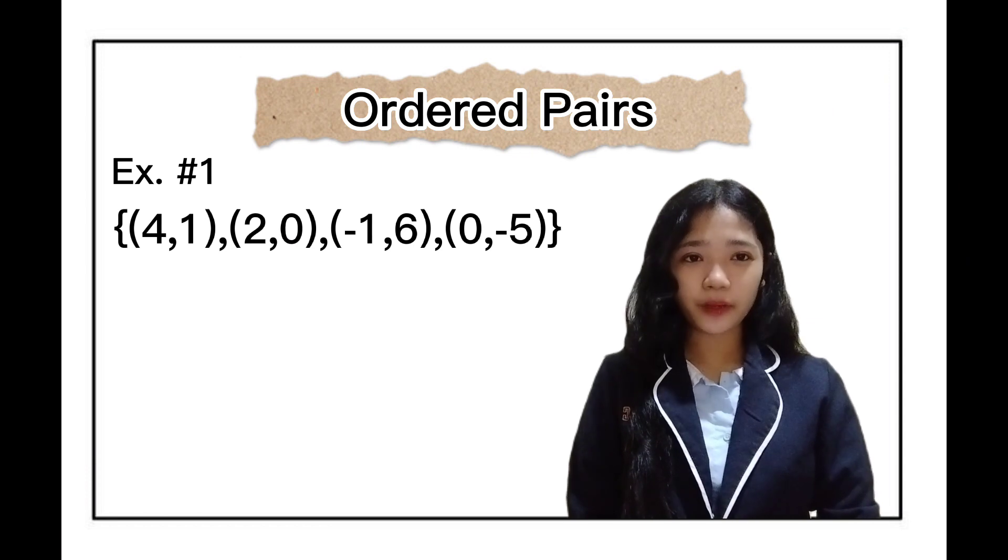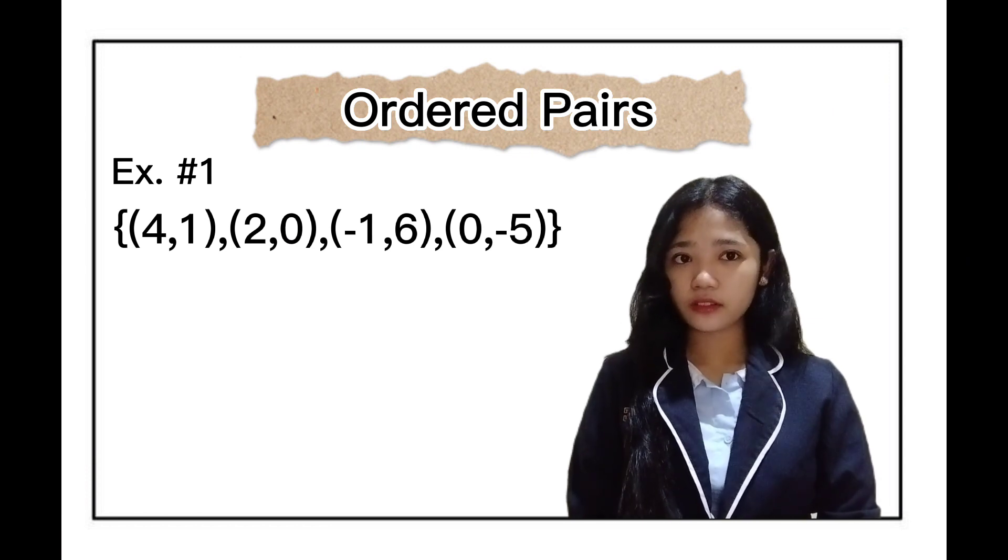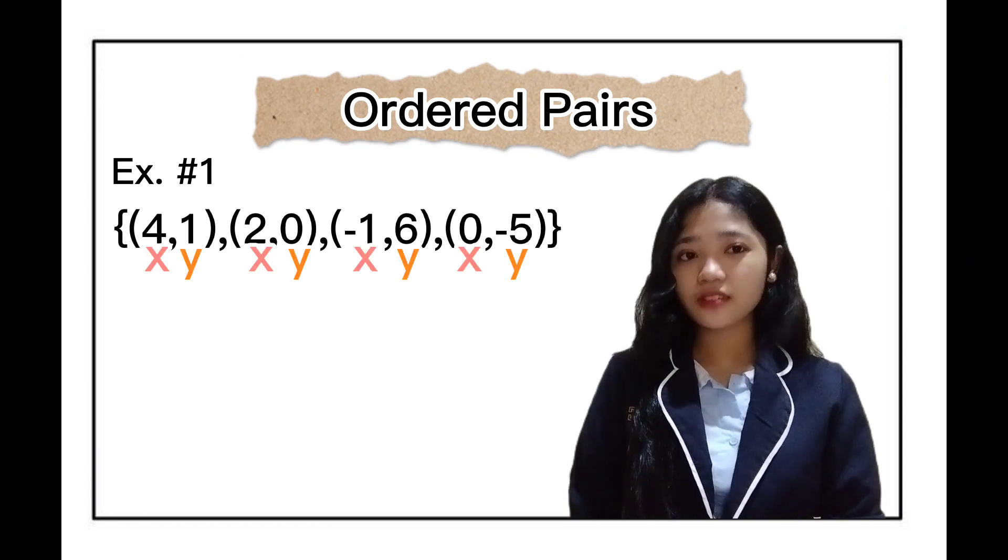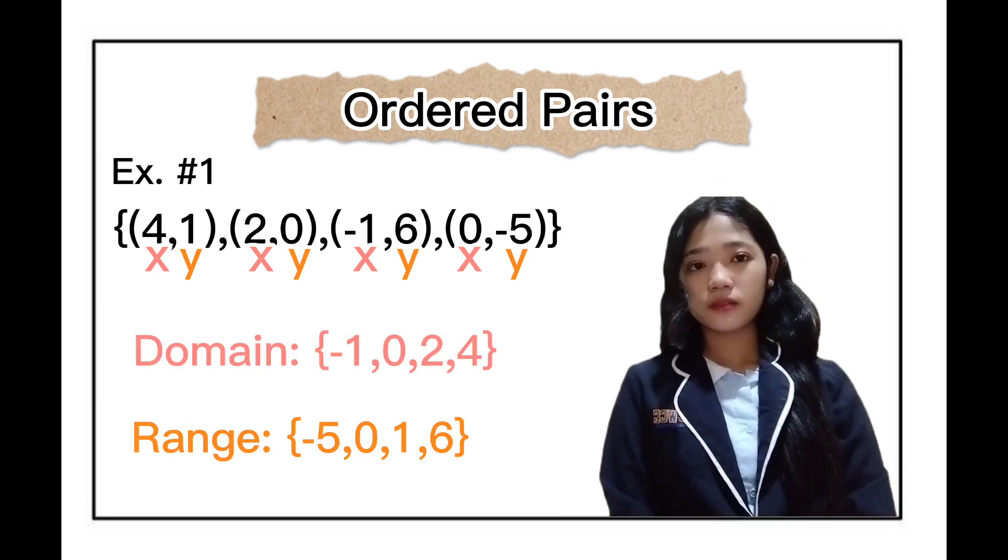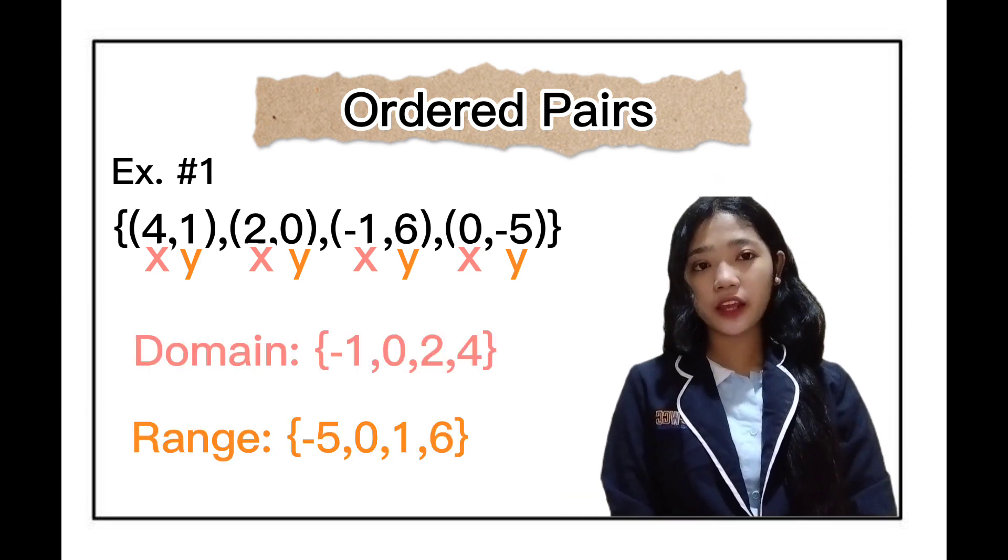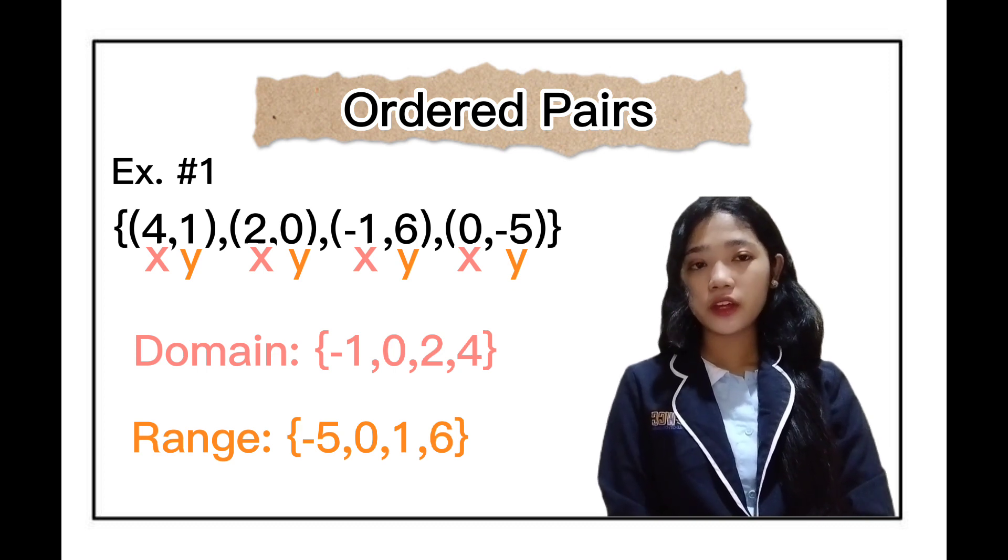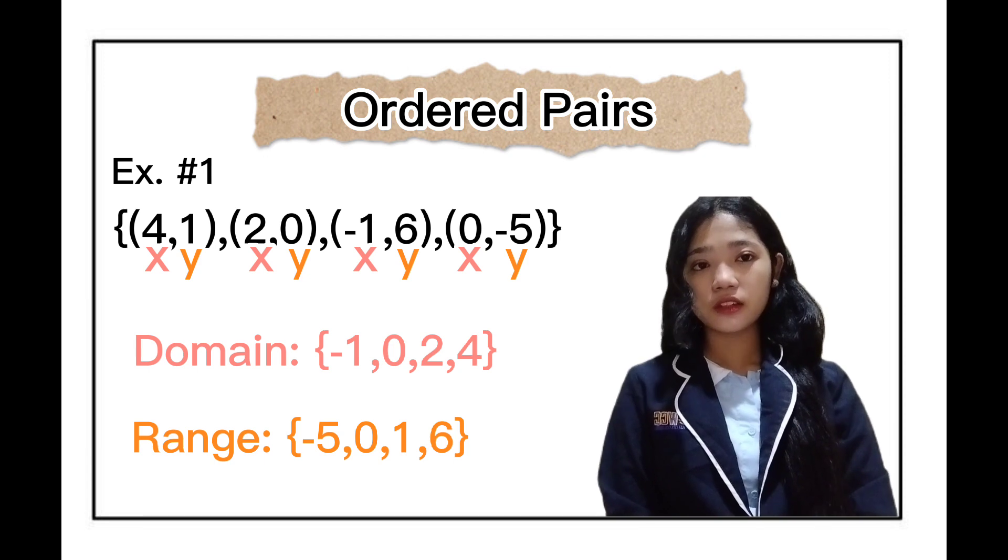Here is the example of our ordered pairs. X represents the domain and Y represents the range. So, the domain is negative 1, 0, 2, and 4. And then the range is negative 5, 0, 1, and 6. It's easy, right?